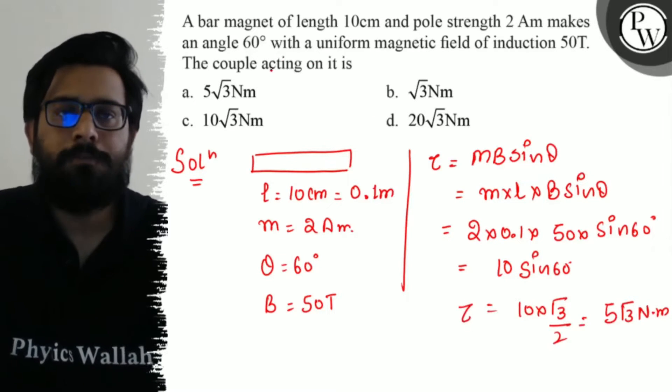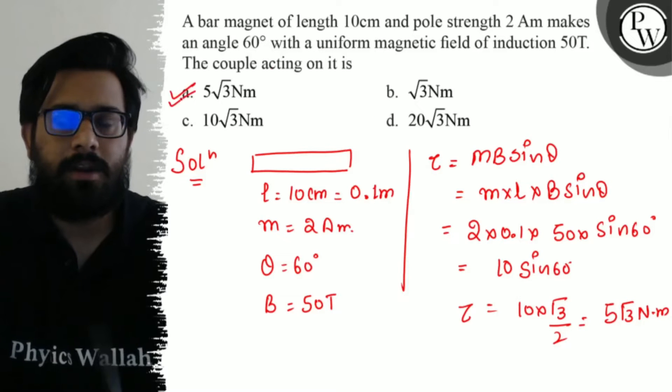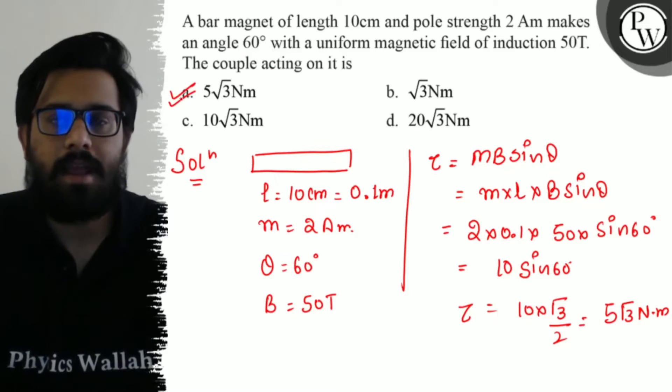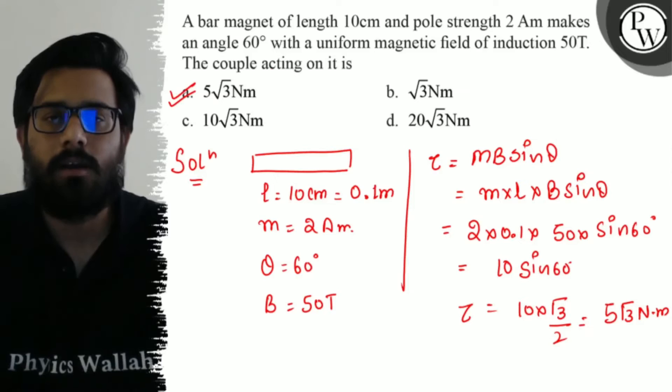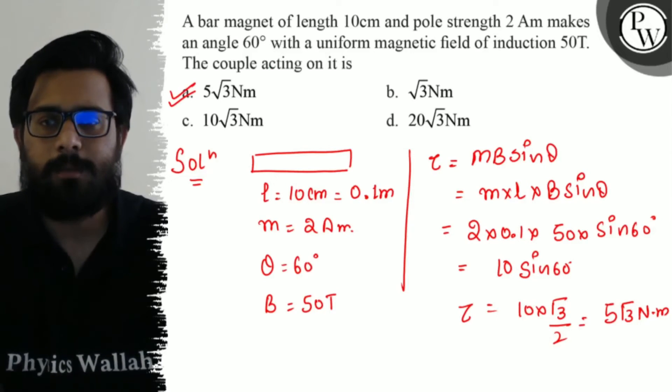So this is the value of couple: 5 under root 3 newton meter, which you get in the first option. And hence your first option is absolutely correct. So I hope you get the concept of this question.